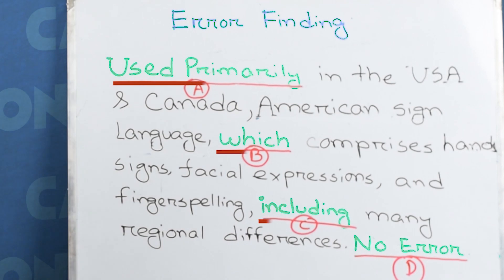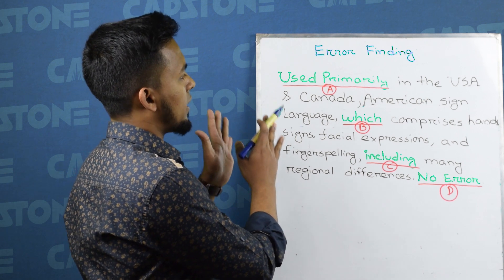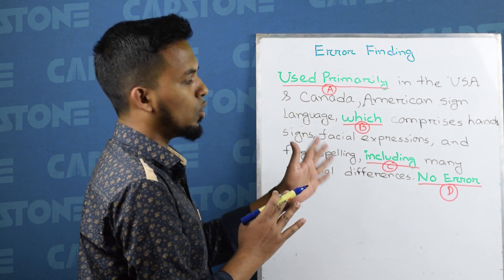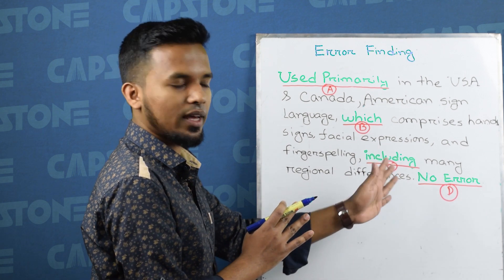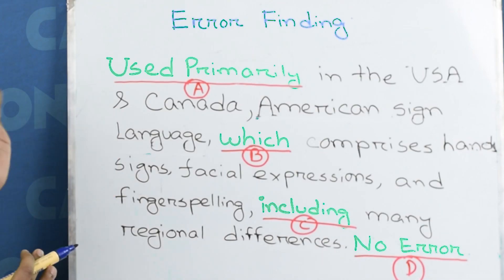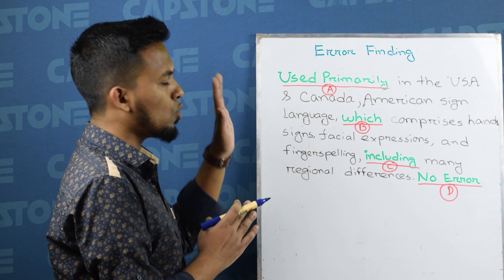In this sentence there are four underlines and in one underline there must be an error. So if there is no error then we should go for no error part. I mean the answer will be then D. When we start, we will check part A, B, or C to see what the answer is.